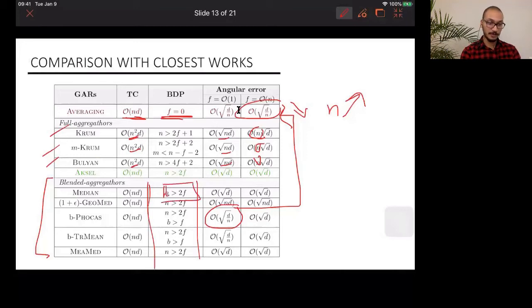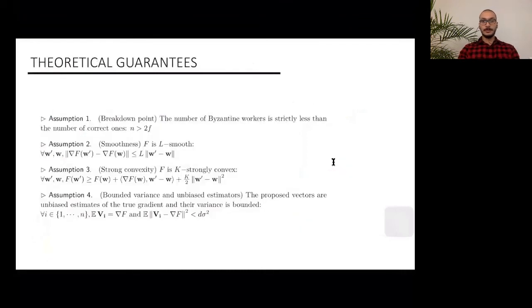And they didn't have an optimal breakdown point. So they are far from the N bigger than 2F. For example, Boolean can only defend against nearly a quarter of the Byzantine workers. So we came up with Axel that has improved on the three properties. Basically, we have taken the best out of the two categories. We took optimal time complexity and breakdown points, plus the low angular error from the blended approaches. And we took the low overhead accuracy cost from full gradient approach, which makes our aggregation the best as we will see in the evaluation section.